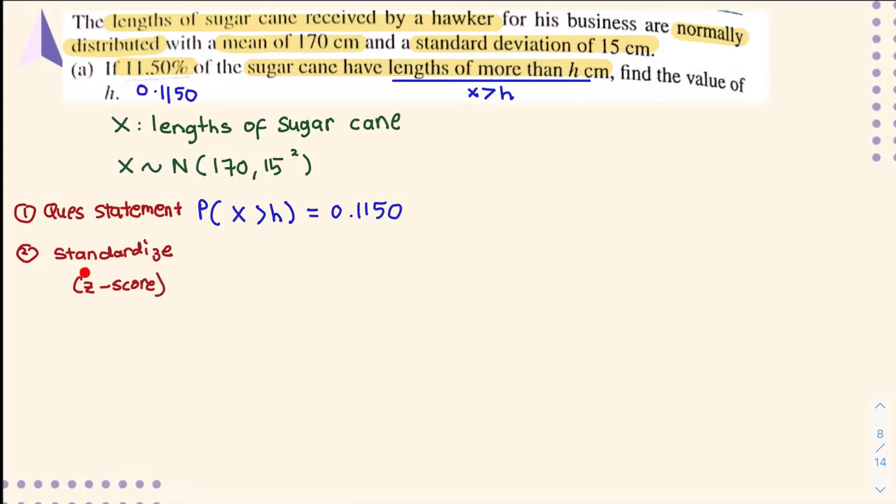Second, you have to standardize your x to z using the z-score, where P(z greater than (h minus mean 170) over standard deviation 15) equals 0.1150. You don't have to change the probability because it's the same as the statement before.